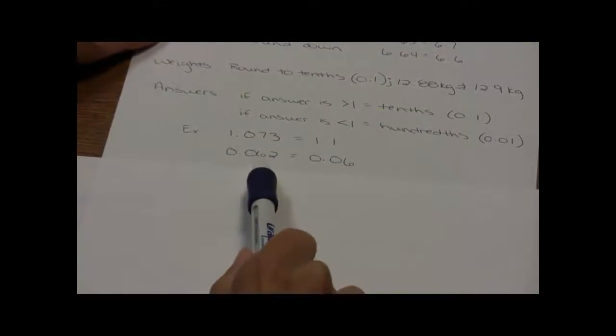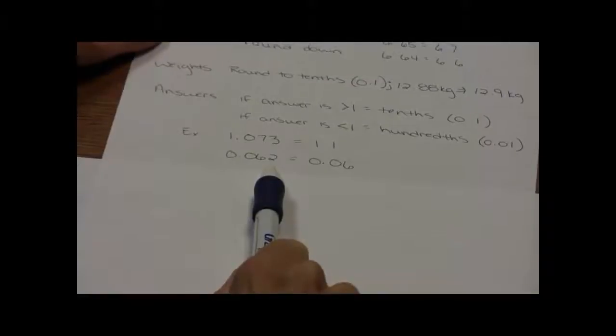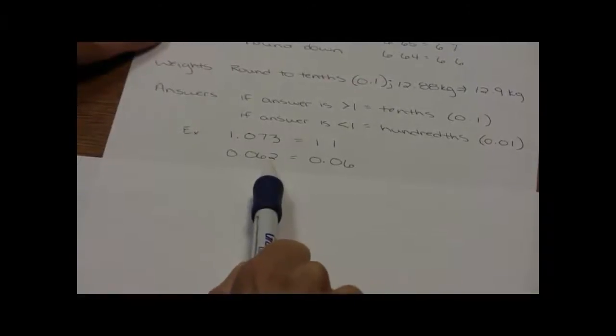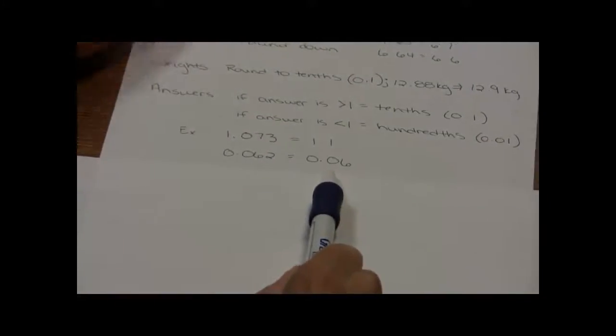If the answer is less than 1, I'm going to round to the hundredths position. In this case, the 6 is in the hundredths position. I look at the number directly to the right, which is a 2, and because that's 4 and below, I'm going to keep it at 0.06.